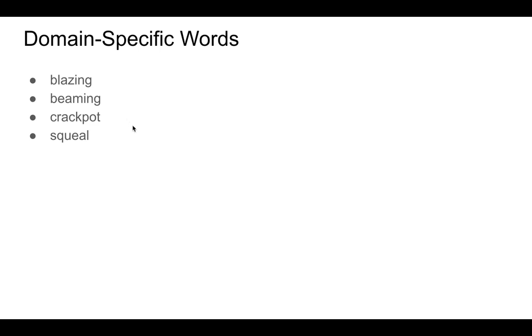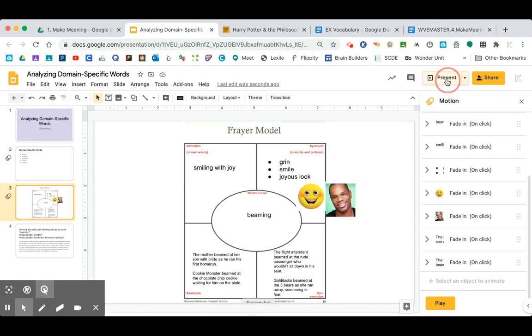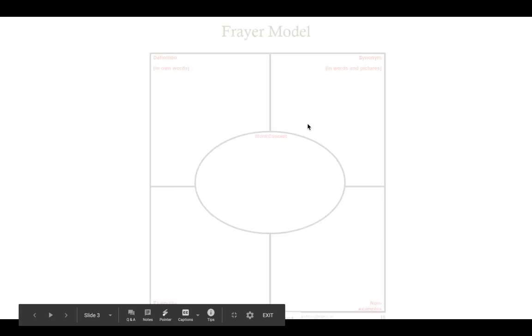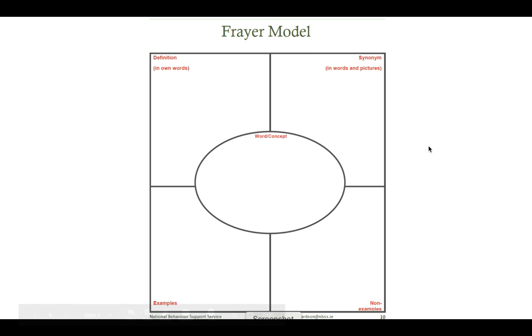So I'm going to pick one of these words to analyze. Analyze means figure out why the author chose this word. I'm going to choose beaming. One way to get to know a word better is to do something called a Frayer model. You're going to be working with the Frayer model as you analyze words on this assignment. You can see that there are five sections. The first section, you add your word. Then you add the definition in your own words. I actually looked up the word beaming.